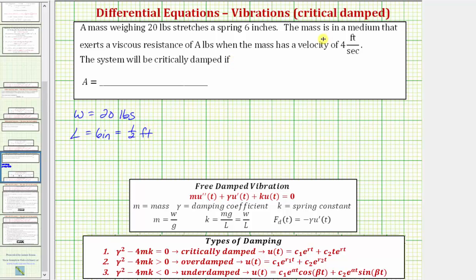And then we're told there's a viscous resistance of a pounds when the mass has a velocity of four feet per second, which means the damping force F sub d is equal to a pounds when, because the displacement function is u of t, the velocity would be u prime of t, so F sub d equals a pounds when u prime of t is equal to four feet per second.